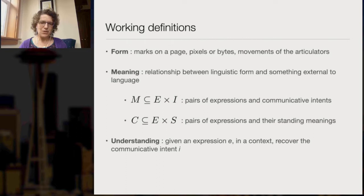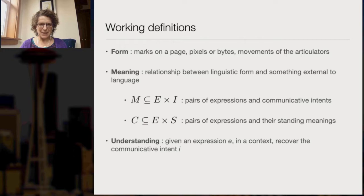The harder one is meaning. We take meaning to be the relationship between linguistic form and something external to language. We have two ways of looking at this: the most fundamental is meaning as a relationship between expressions and communicative intents — the meaning relation M takes us into pairs of expressions and intents E and I. We also have relation C, which involves pairs of expressions and their standing meanings. Given these definitions, we can talk about understanding: given an expression E in some context, recovering the communicative intent I, perhaps using the standing meaning S, is understanding.